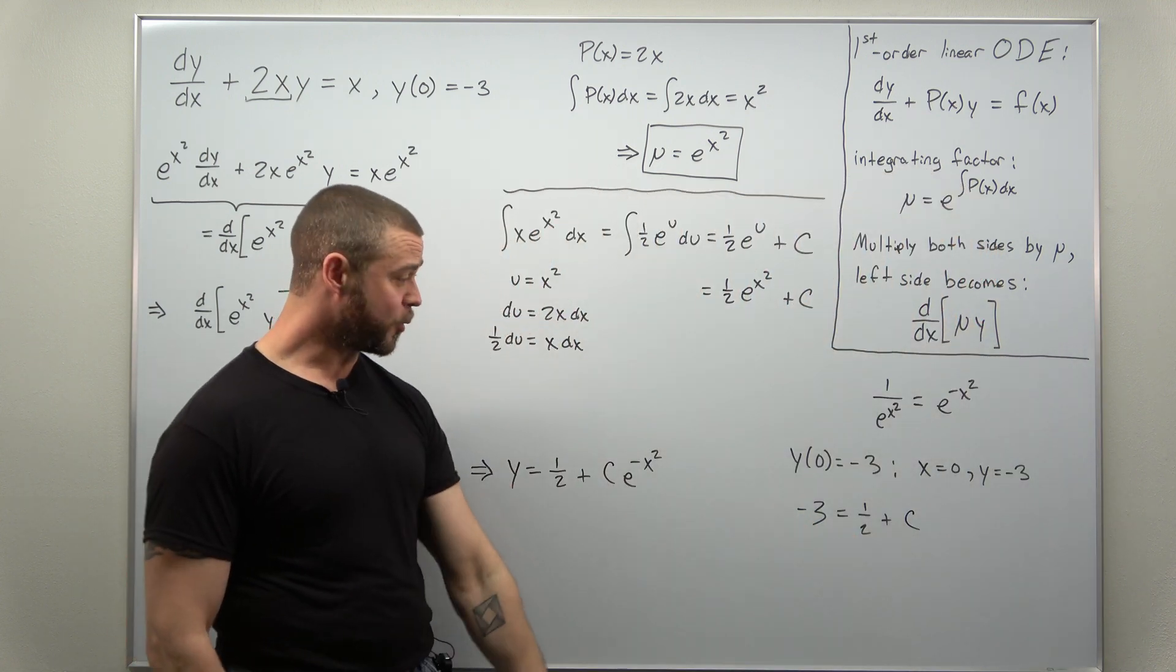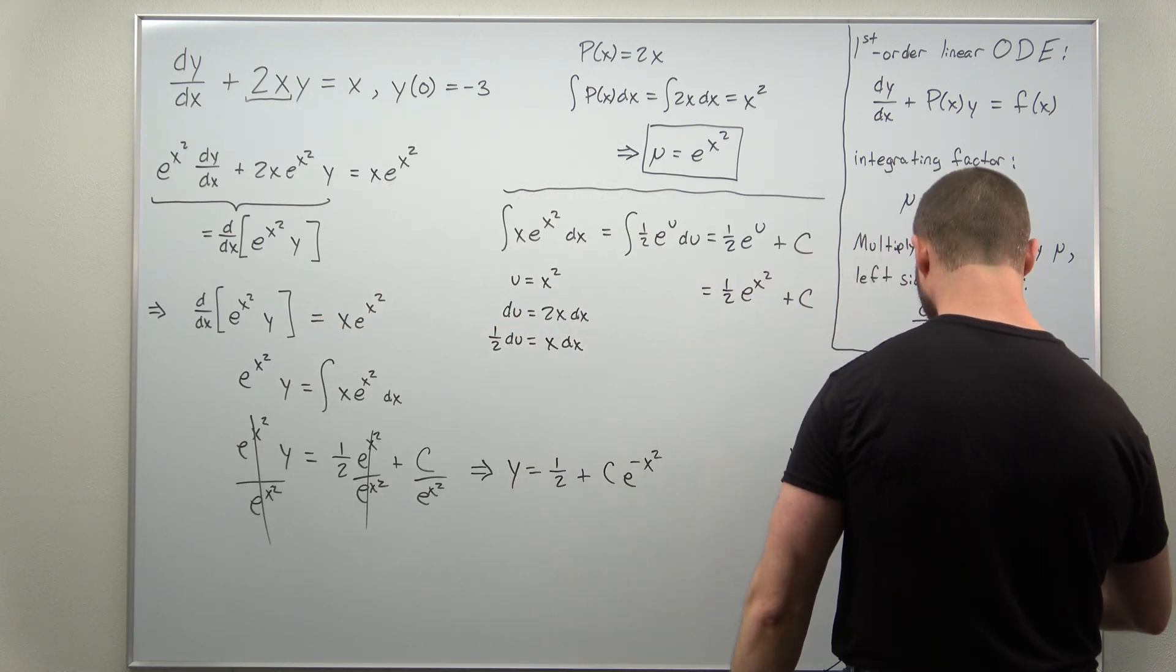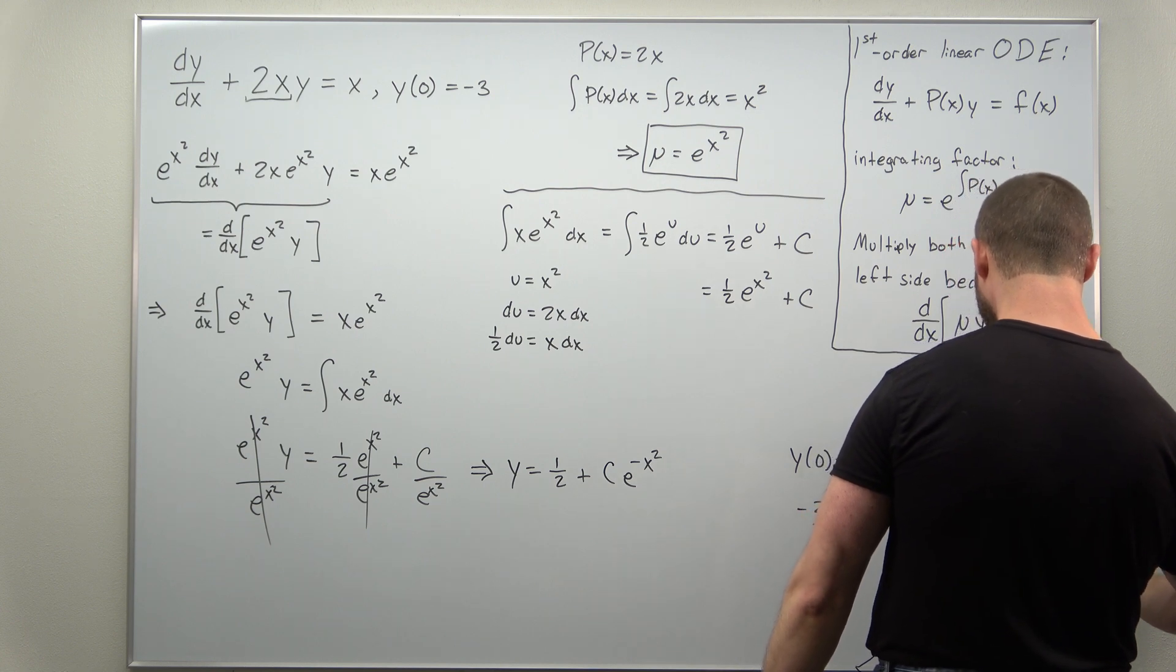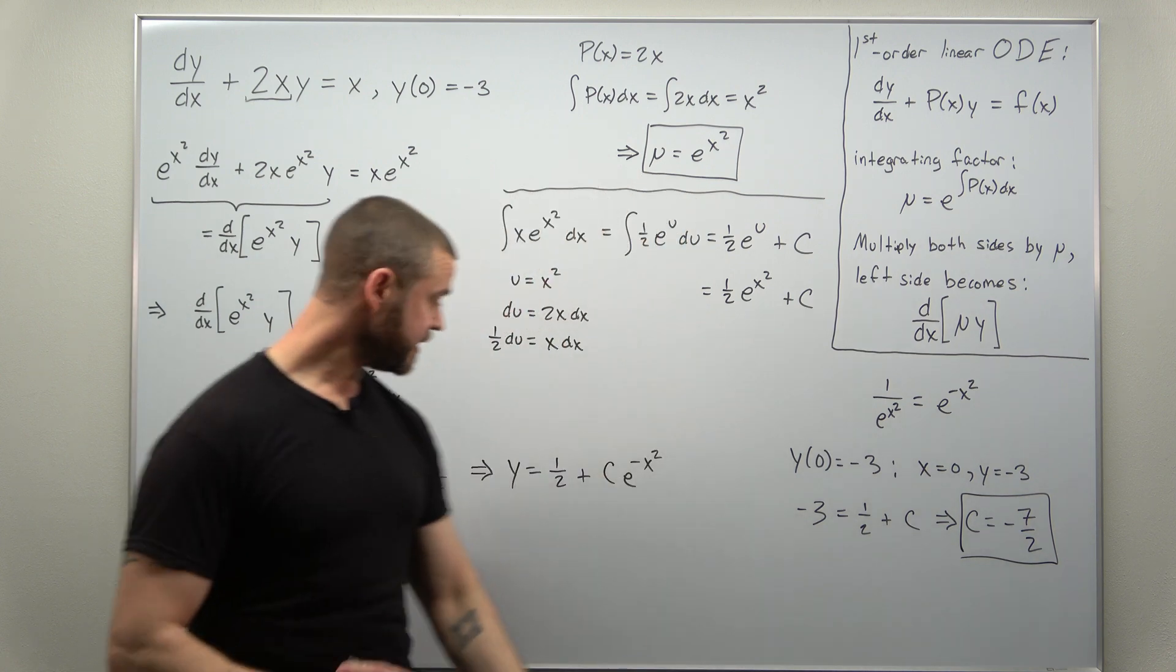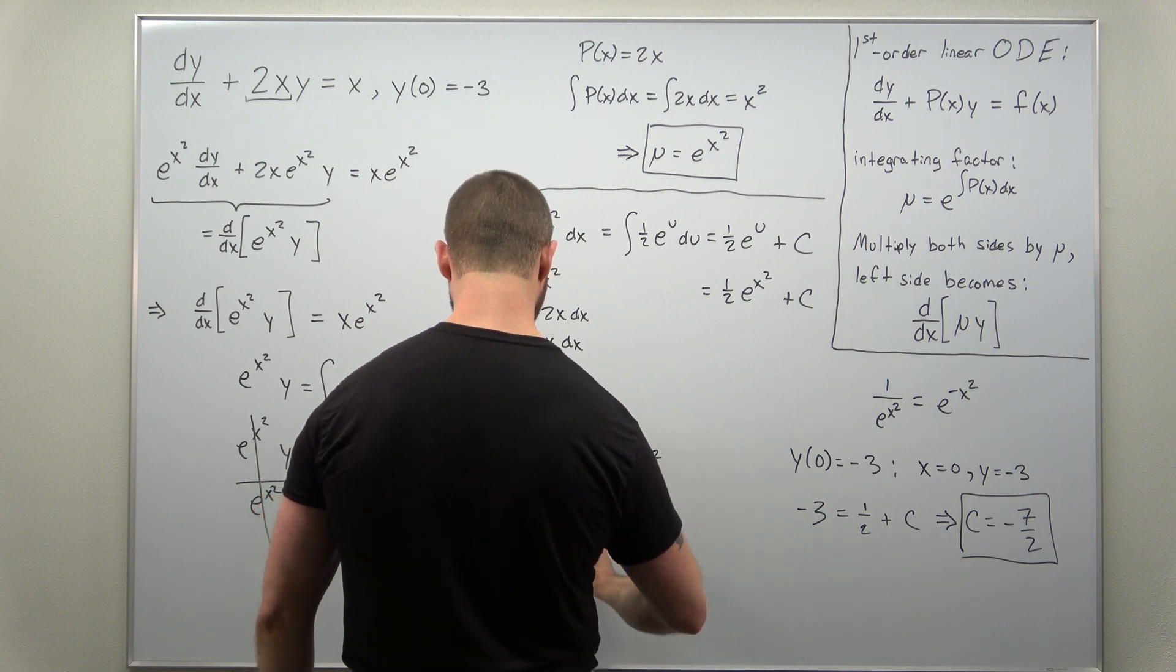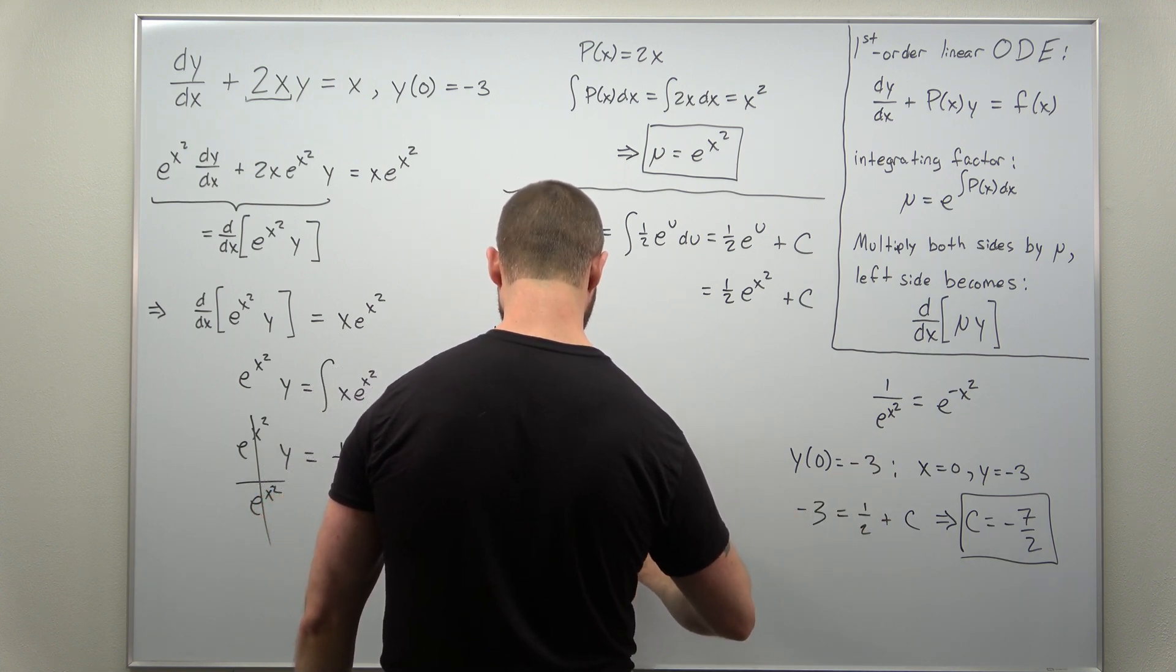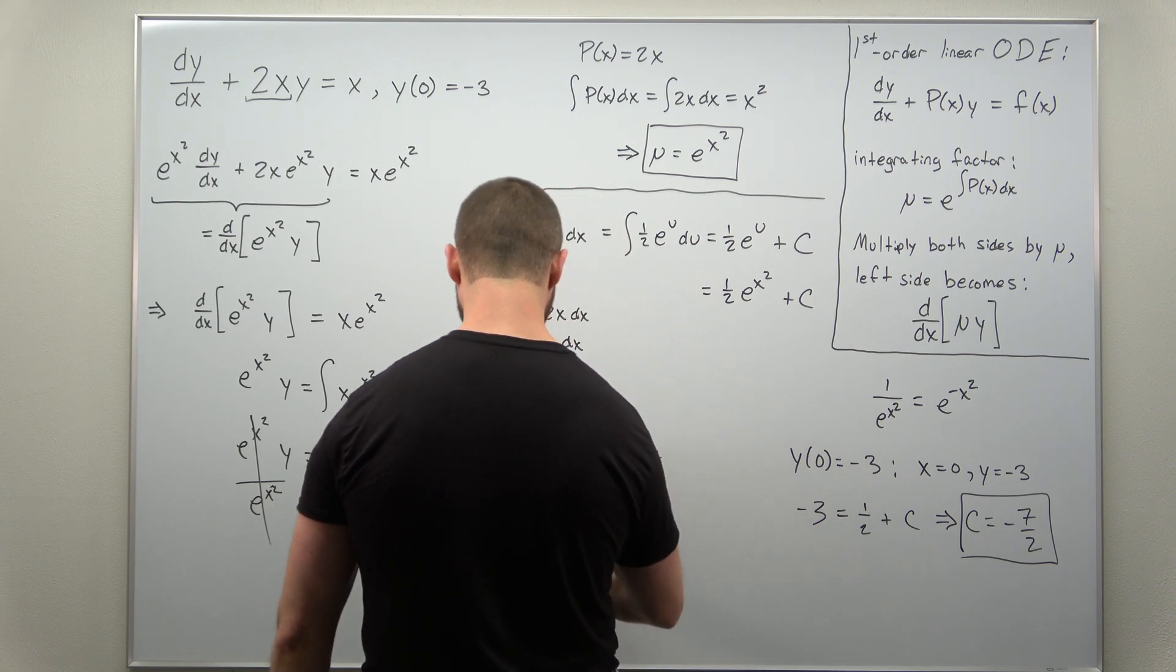And this is pretty straightforward. Just go ahead and subtract a half, and it looks like you should get c as negative 7 halves. And we can just plug that in and we get our explicit solution. We get it as y equals 1 half, but now minus 7 over 2 times e to the negative x squared.